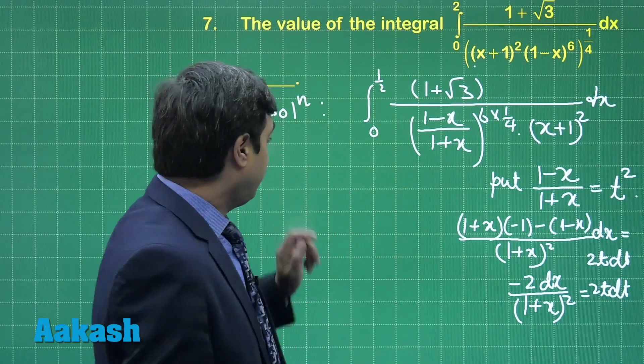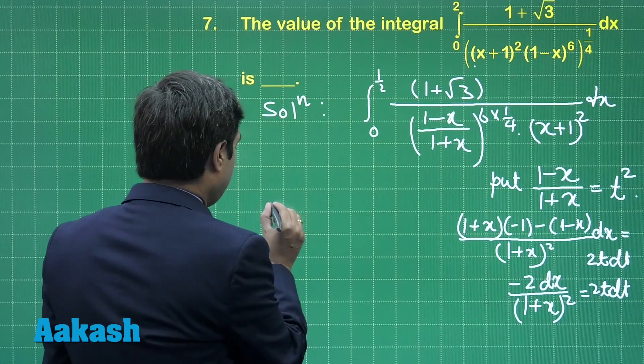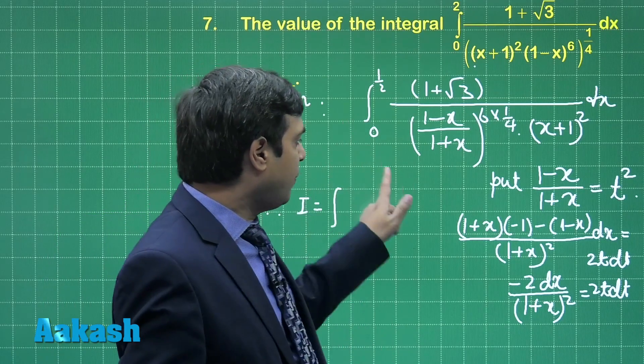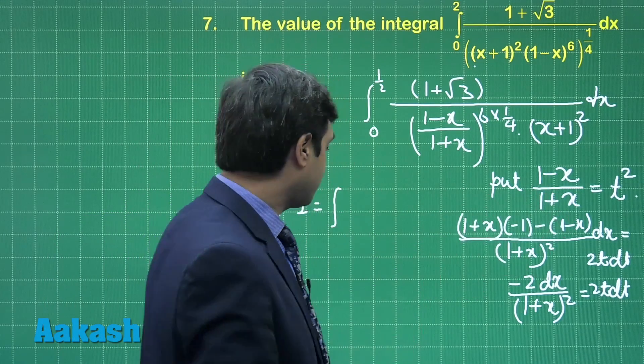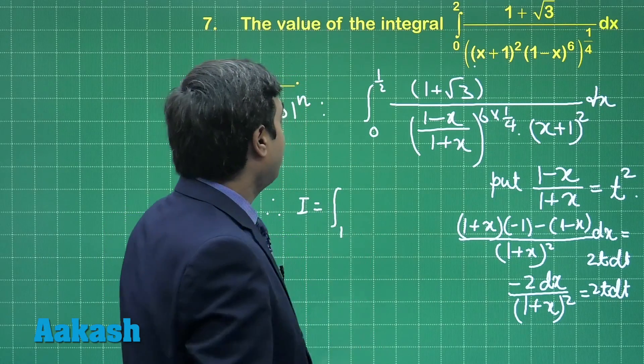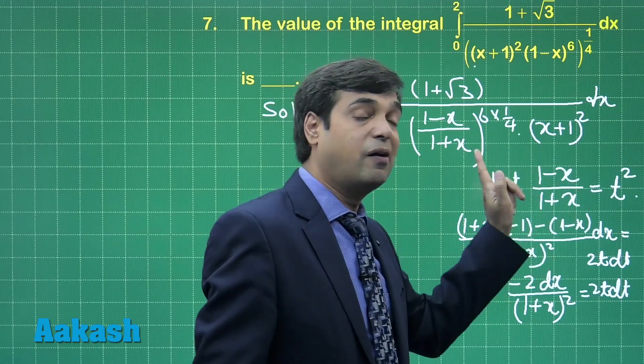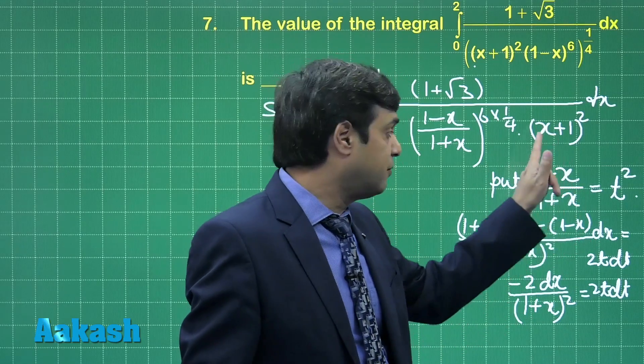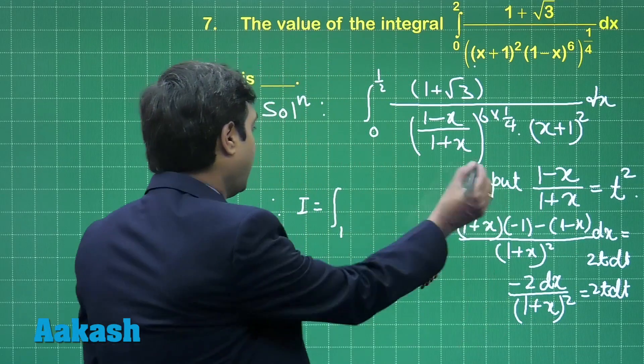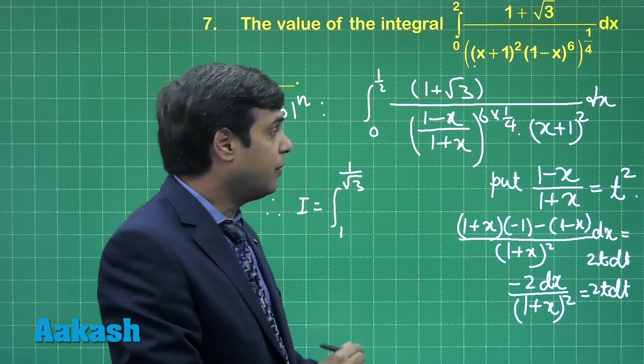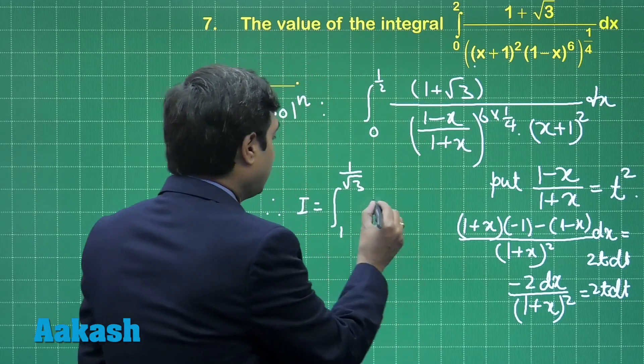Now substituting this thing here, we have integral equals: when we put lower limit as 0 here it comes 1, when we put upper limit as 1/2 it becomes (1 minus 1/2) upon (1 plus 1/2), that is 1 upon 3 is t square, meaning t is 1 upon root 3. This is clear.